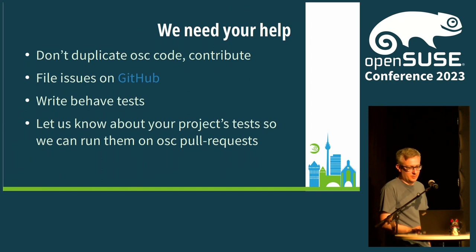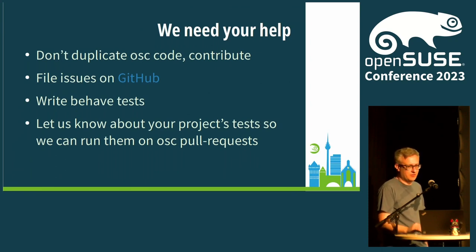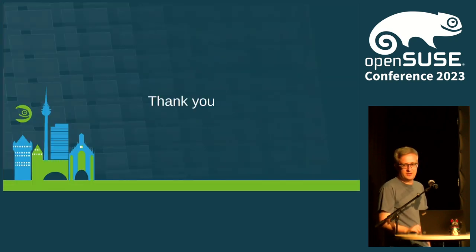I will help you with that. Last but not least, if you have a project that relies on OSC but you feel that OSC breaks it too often, point me to your tests. If they are capable of running on GitHub, I will run them during pull requests, and if something fails we will know before pushing broken code to master. That's pretty much it — thank you, and if you have any questions, please ask.